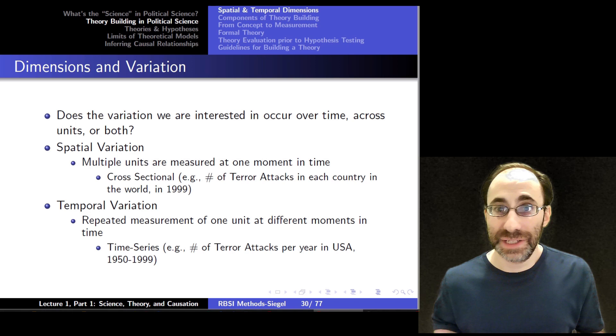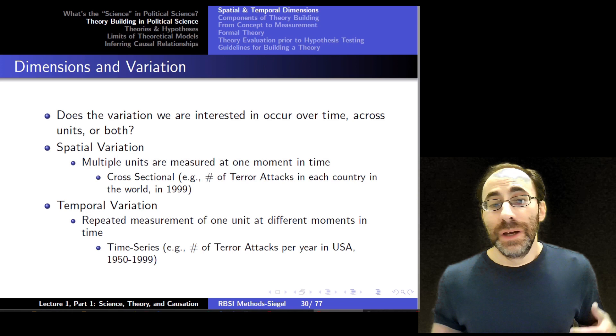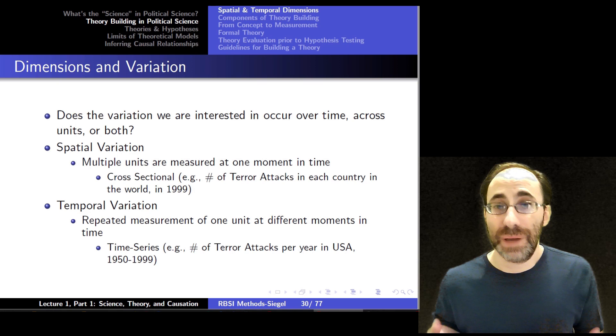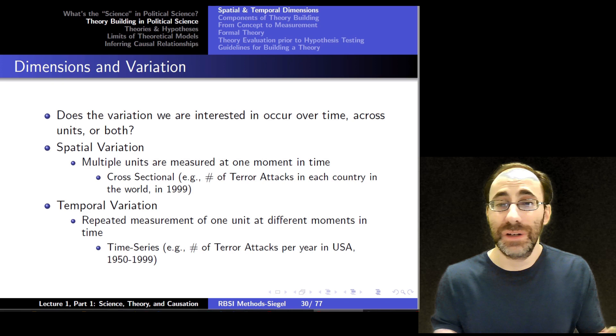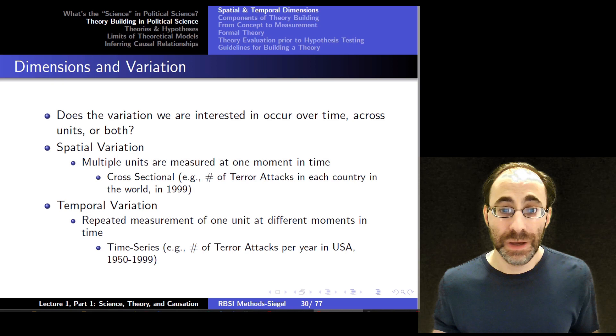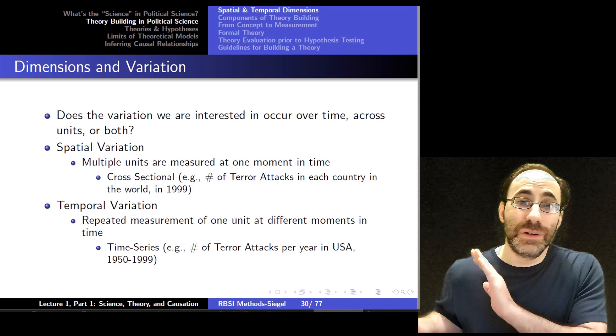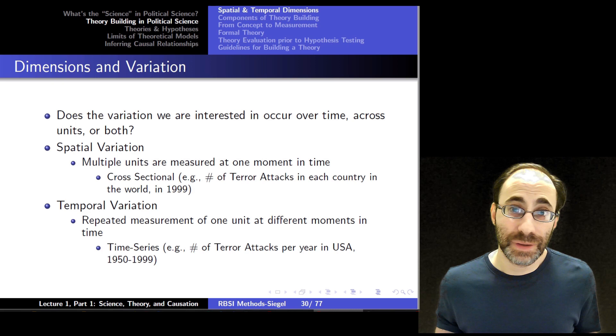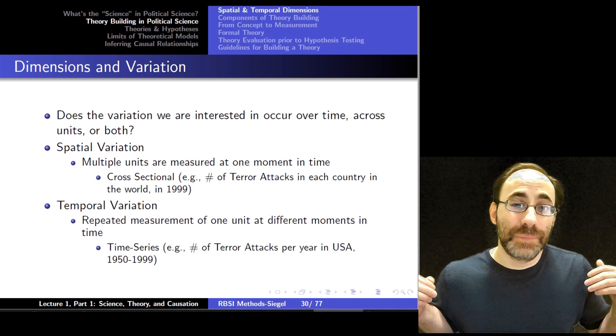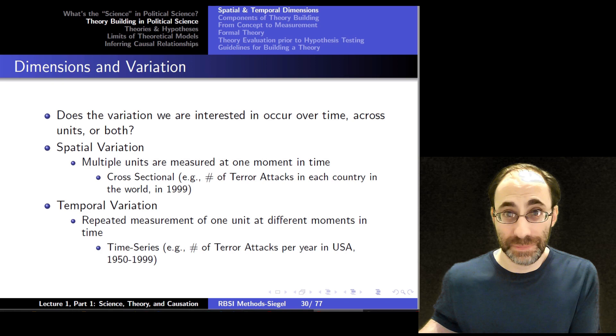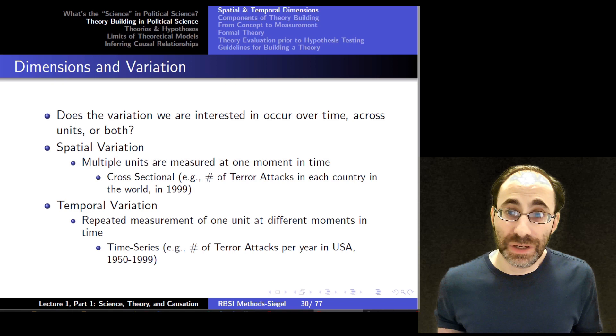Again, this is all variation in your concept of interest, which is determined by your research question. One thing to ask is to look at is the variation you see happening across units, across time, or both. If it's purely spatial, then you assume that the interest is at a given moment in time and how different units vary. And again, the units can be people, they can be countries, they can be governments, whatever. So all these cases are cases of cross-sections, how we measure multiple units within a given moment of time. The second type of variation here is temporal variation. Here, you're repeatedly measuring some concept for a particular unit across time. We call these time series, because they're a series across time of a particular unit.